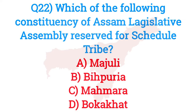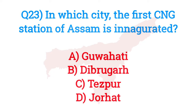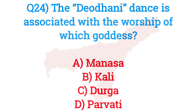Question number twenty-two: Which constituency of the Assam Legislative Assembly is reserved for Scheduled Tribes? The answer is option A — Majuli. Question number twenty-three: In which city was the first CNG station of Assam inaugurated? The answer is option B — Dibrugarh.